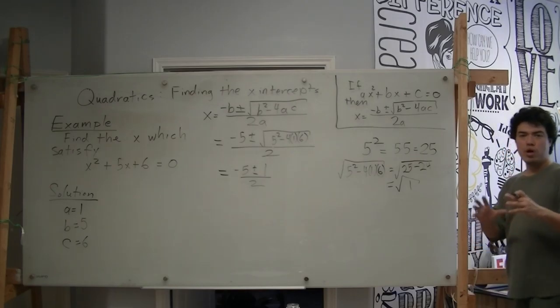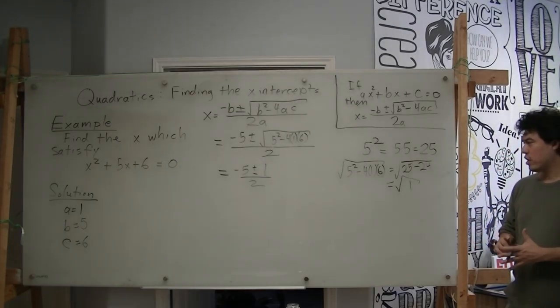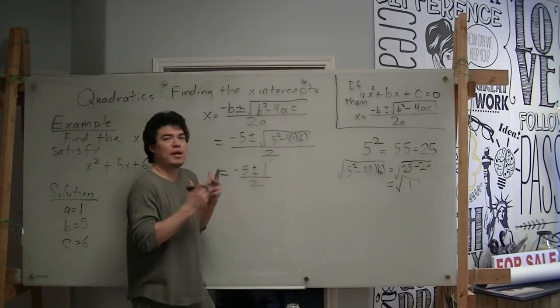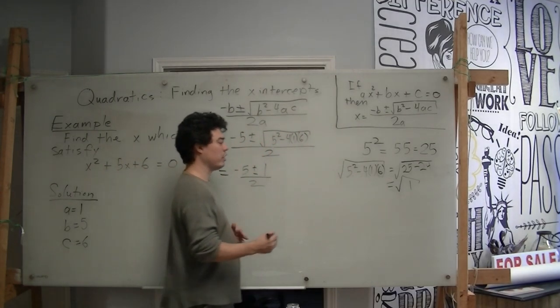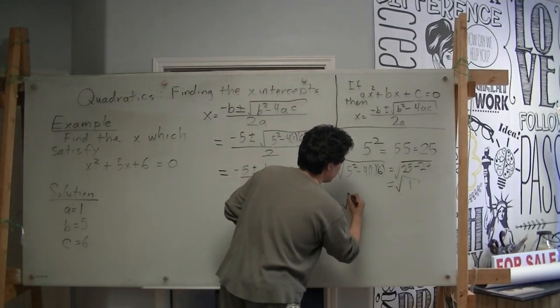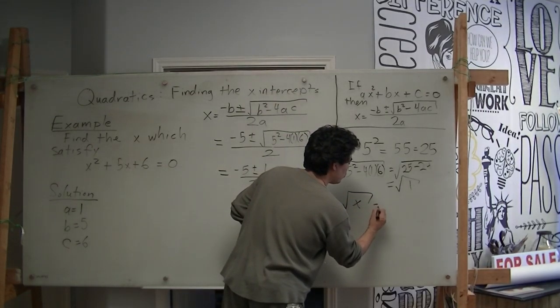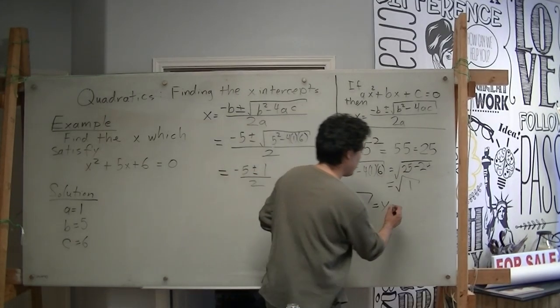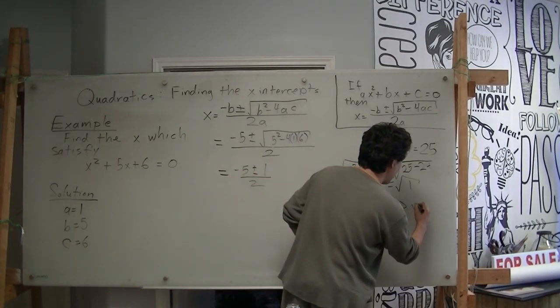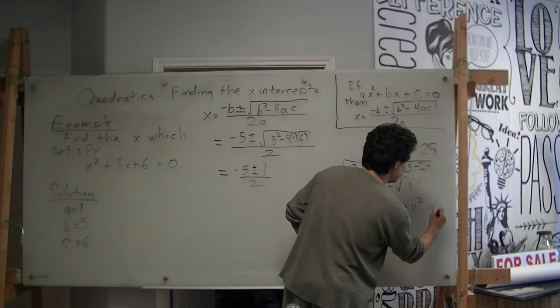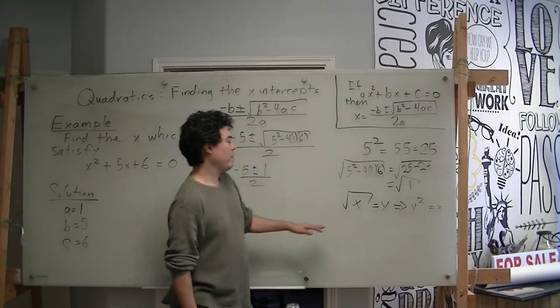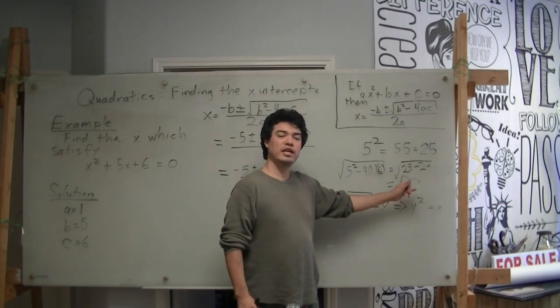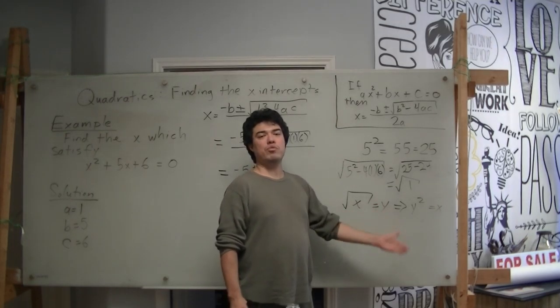Now we want to remember the square root of a number is a number which when you multiply it by itself gives you the number your square root is. So let's pretend that the square root of x were equal to y for some reason. Then this would imply that y squared had to be x. That's basically what we're saying. So in this case, the square root of 1 is 1 because 1 times 1 is 1.